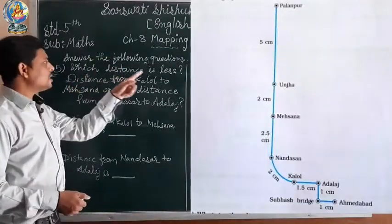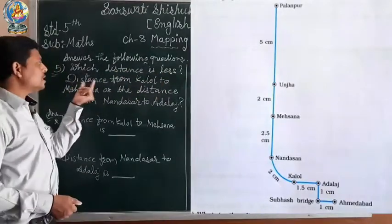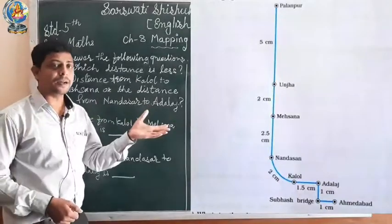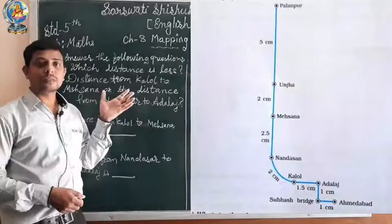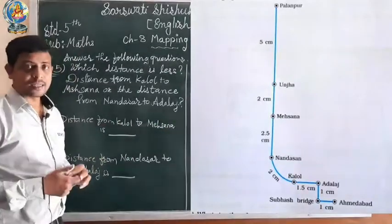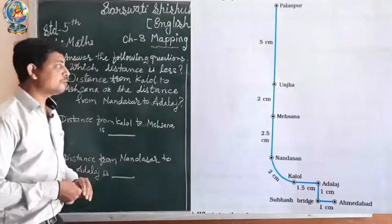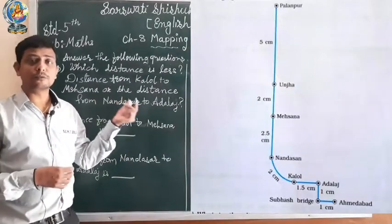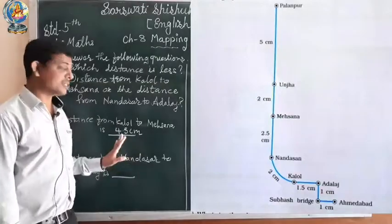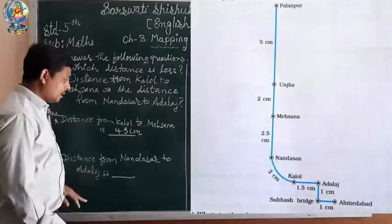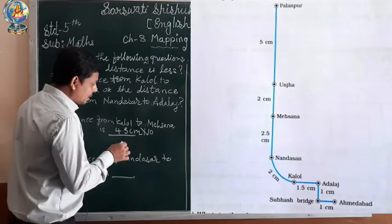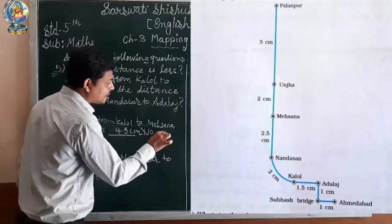Question number 5: Which distance is less — the distance from Kalol to Mahsana, or the distance from Nandasar to Adalaj? First, let us find the distance from Kalol to Mahsana. From Kalol to Nandasar is 2 centimeter, and from Nandasar to Mahsana is 2.5 centimeter, that is 4.5 centimeter. Converting to kilometers: 4.5 multiplied by 10 equals 45 kilometers. The distance from Kalol to Mahsana is 45 kilometers.